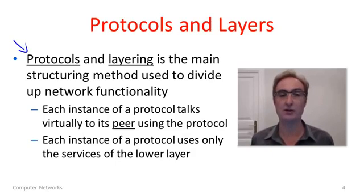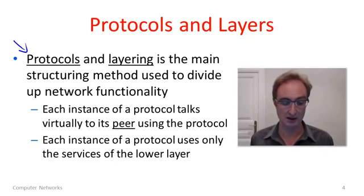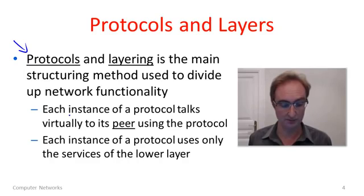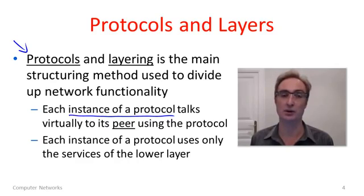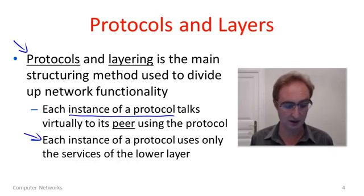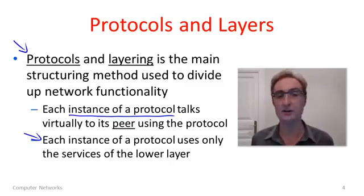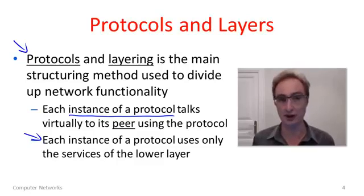Protocols and layering are the main structuring methods used to divide up the functionality of networks. Each instance of a protocol — you might think of this as an object being an instance of a class — talks virtually to its peer protocol instance on a different host elsewhere in the network. But the protocol is only allowed to use the services of a lower layer protocol on the same host.